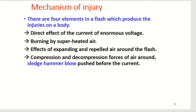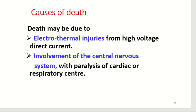Number four: compression and decompression forces of air, like a sledge hammer blow pushed before the current. The causes of death in lightning may be due to: number one, electrothermal injuries from high voltage direct current; and number two, involvement of the central nervous system with paralysis of the cardiac or respiratory center.